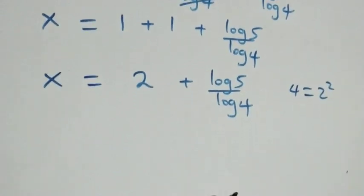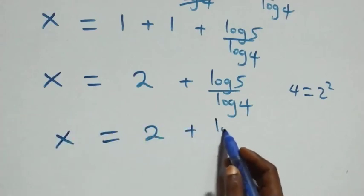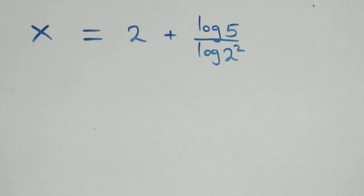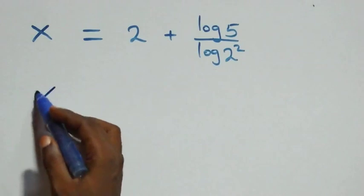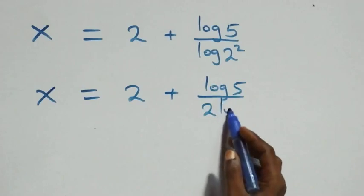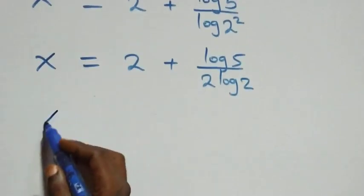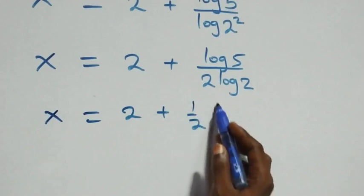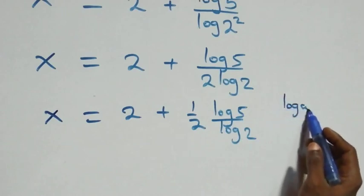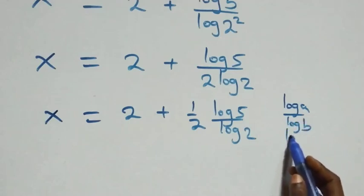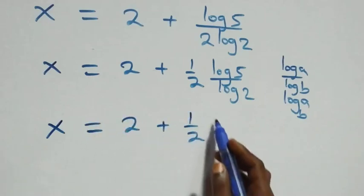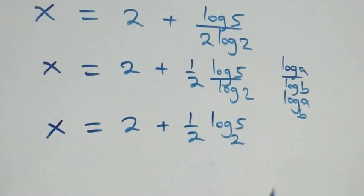We can express four as two squared, so x equals two plus log five over log of two squared. Applying the power rule, log of two squared equals two times log two, giving x equals two plus log five over (two times log two). Applying the change of base formula, log a over log b equals log a to base b, this becomes x equals two plus one half times log five to base two.